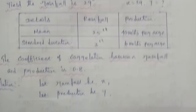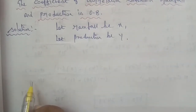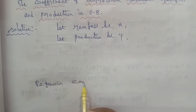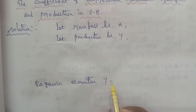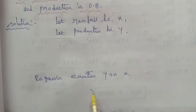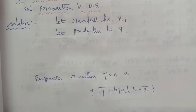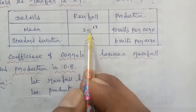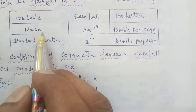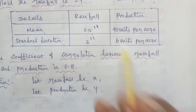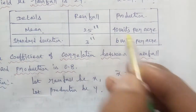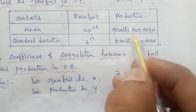So therefore, we know the regression equation y on x. The formula for regression equation y on x is: y minus y-bar equals b-y-x into x minus x-bar. From the given data, the x-bar value is 25.